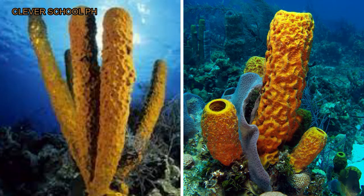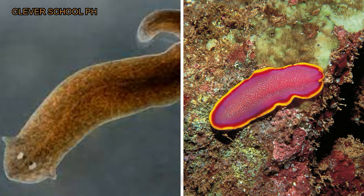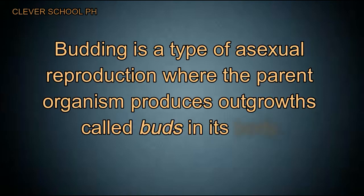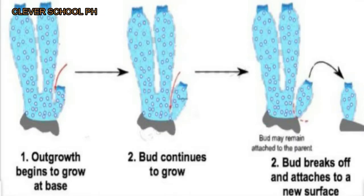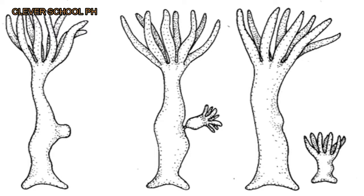Some invertebrate animals like the sponge, hydra, and planaria can reproduce asexually. Animals can reproduce asexually through budding — a type of asexual reproduction where the parent organism produces outgrowths called buds. New organisms develop as small buds on the outer surface of the parent. The buds may break off and a new organism emerges, living independently or remaining attached to form a colony. Budding occurs in hydra, sponges, and some worms.